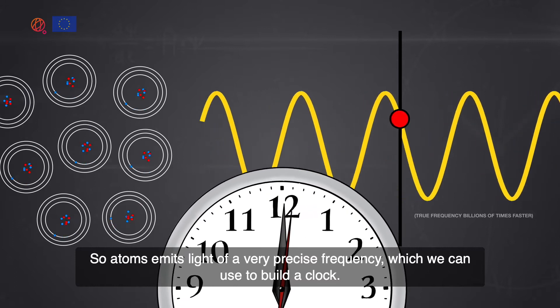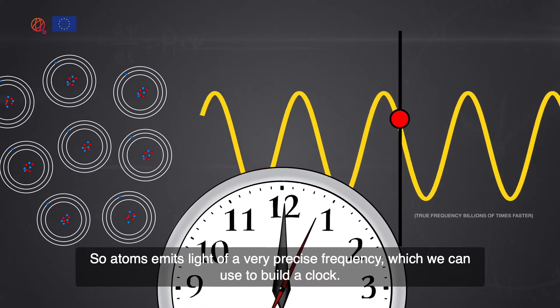Atoms emit light of a very precise frequency, which we can use to build a clock.